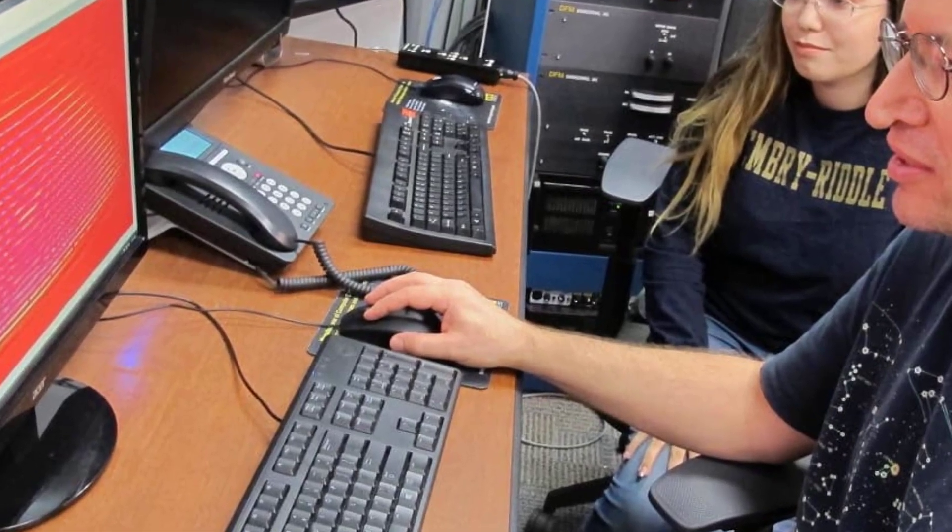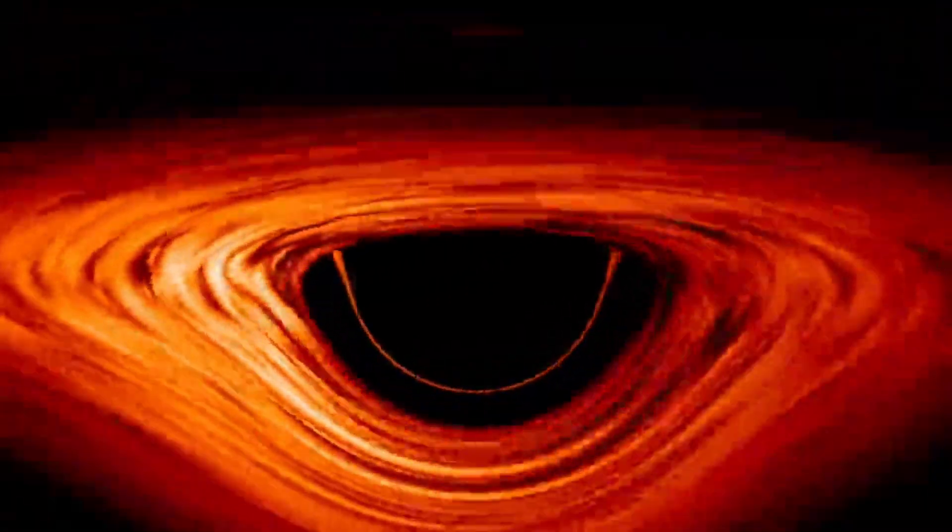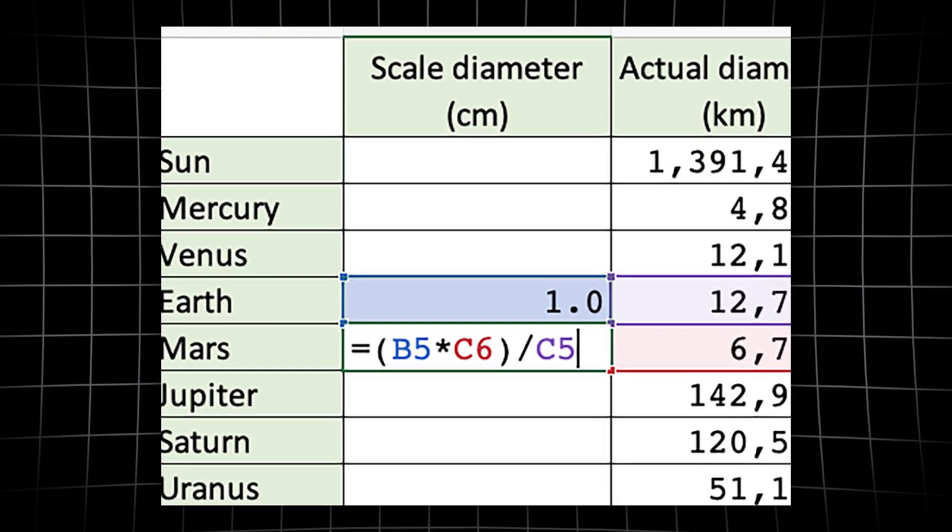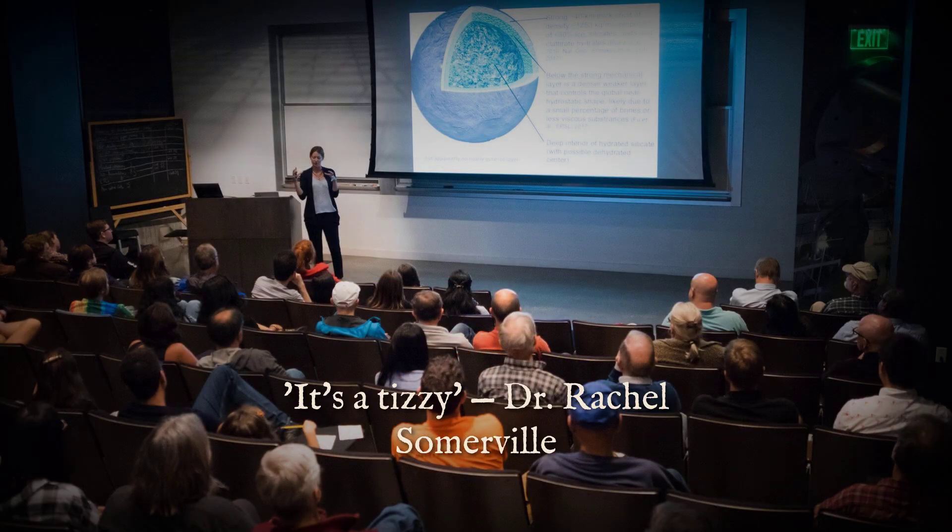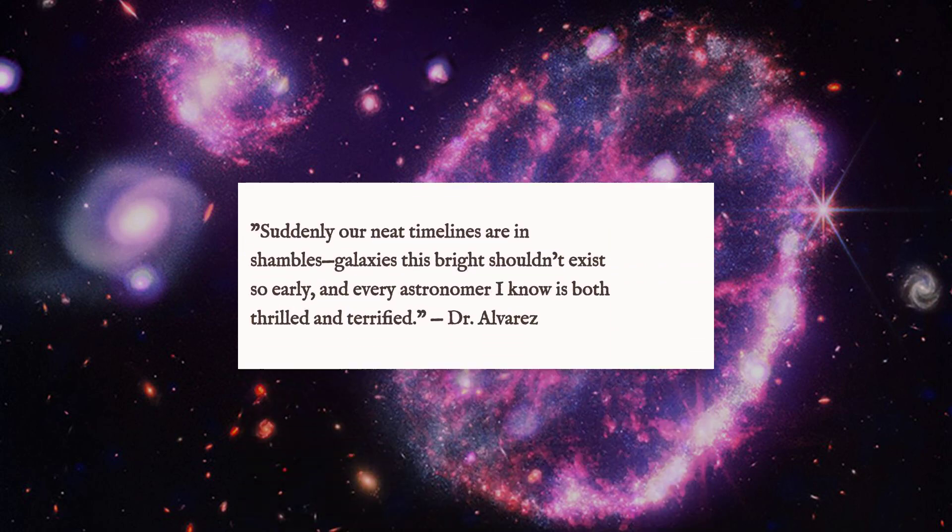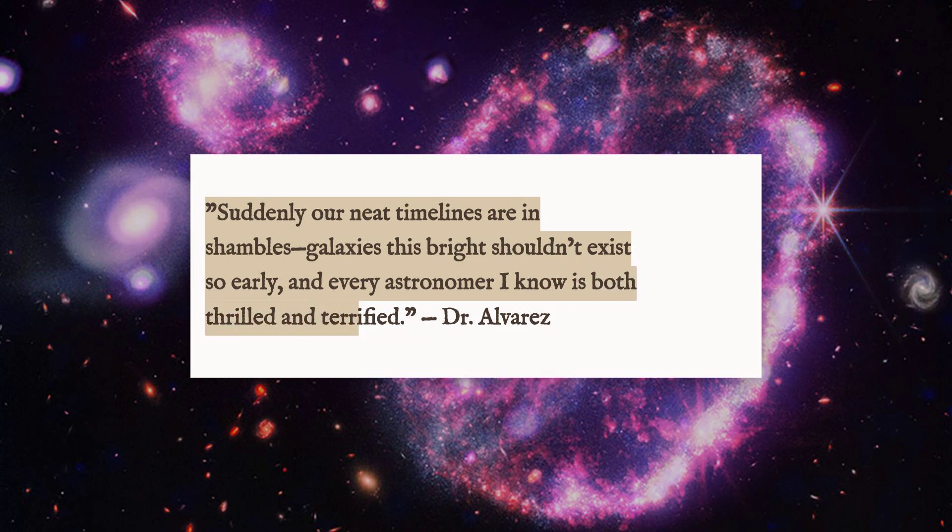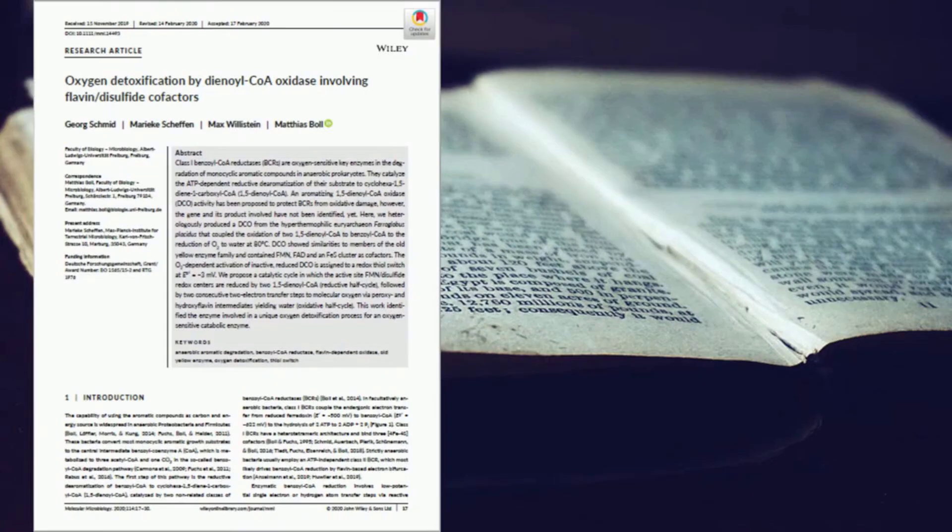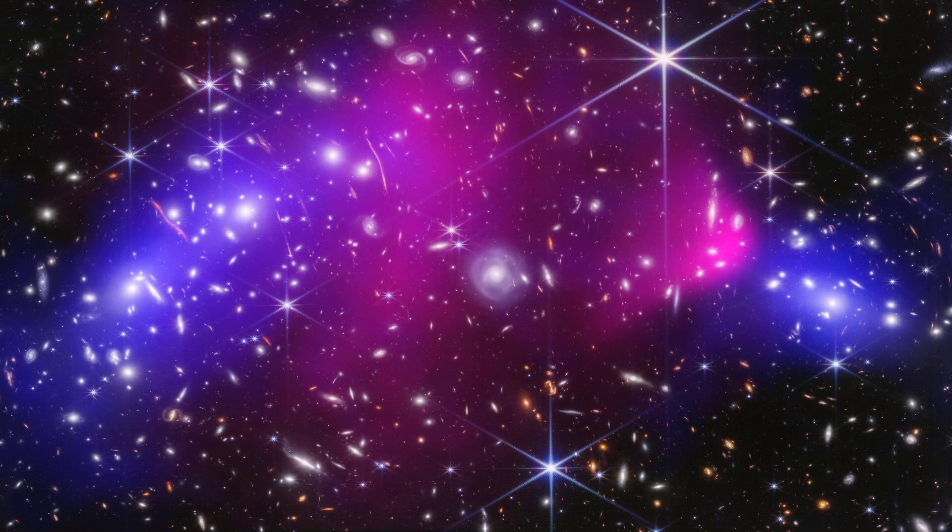Theories started flying. Some insisted the data had to be wrong. Maybe Webb was picking up something closer, masquerading as ancient. Others argued the galaxies must be powered by hidden supermassive black holes, not stars. But the numbers kept coming back big. Rachel Somerville, a leading theorist, called it a tizzy. "Webb found a lot of very luminous galaxies at very, very early times, pumping out huge amounts of ultraviolet light. The theories that had been published before Webb launched did not predict that large a number of such bright galaxies."